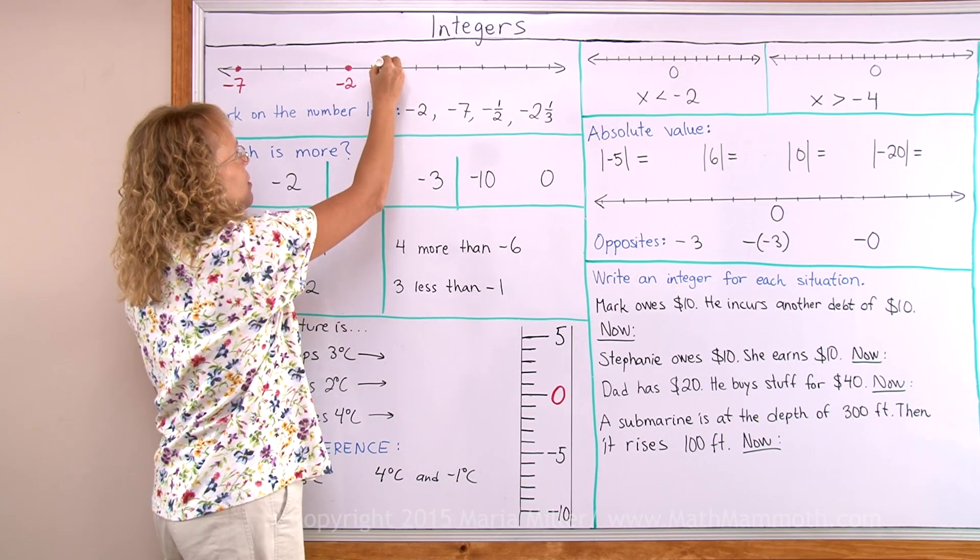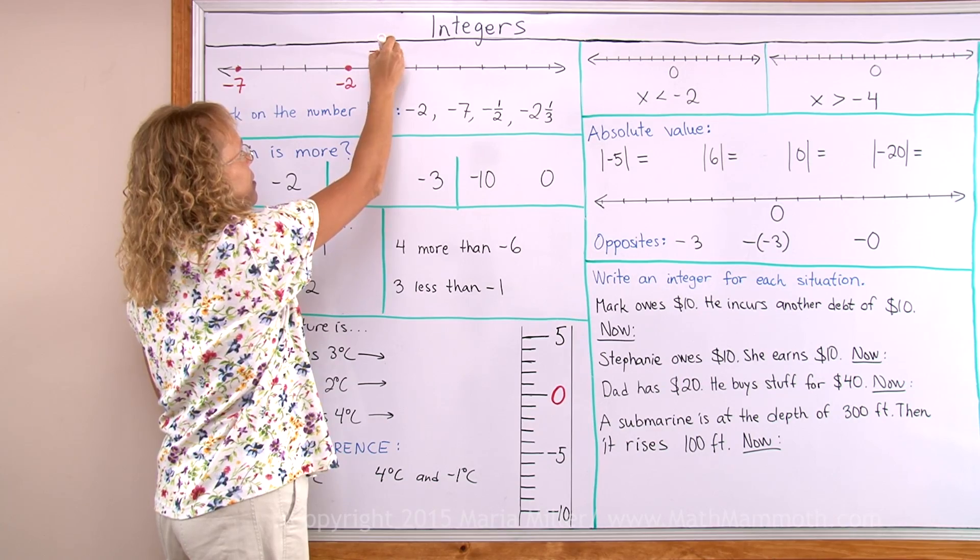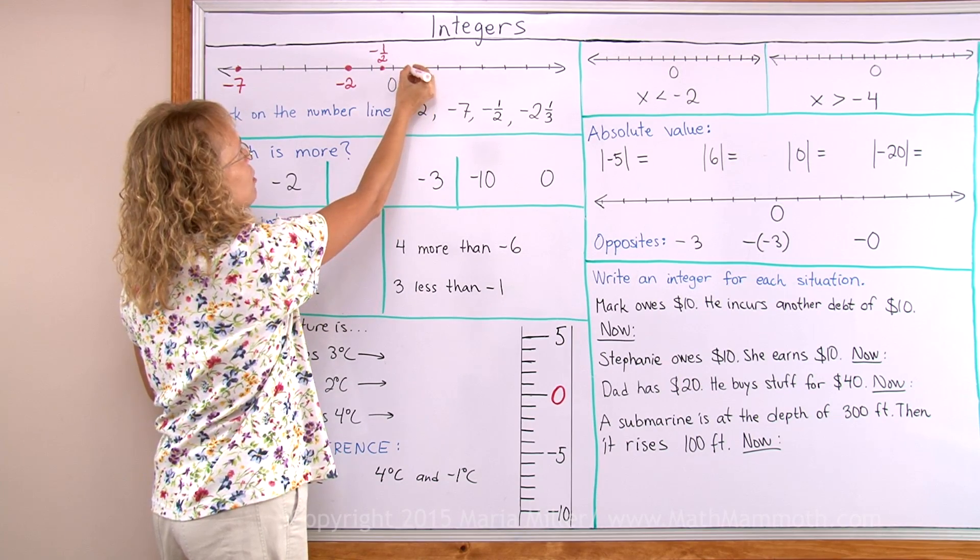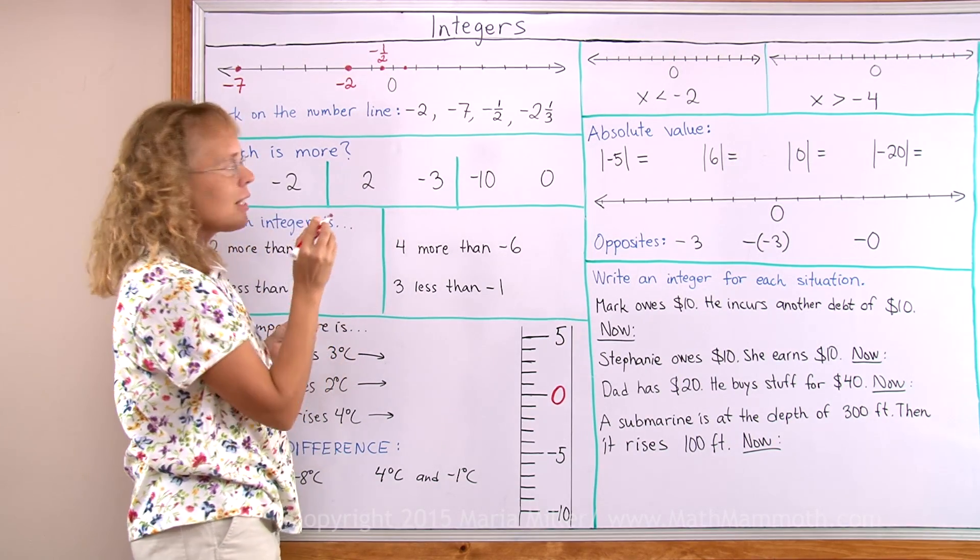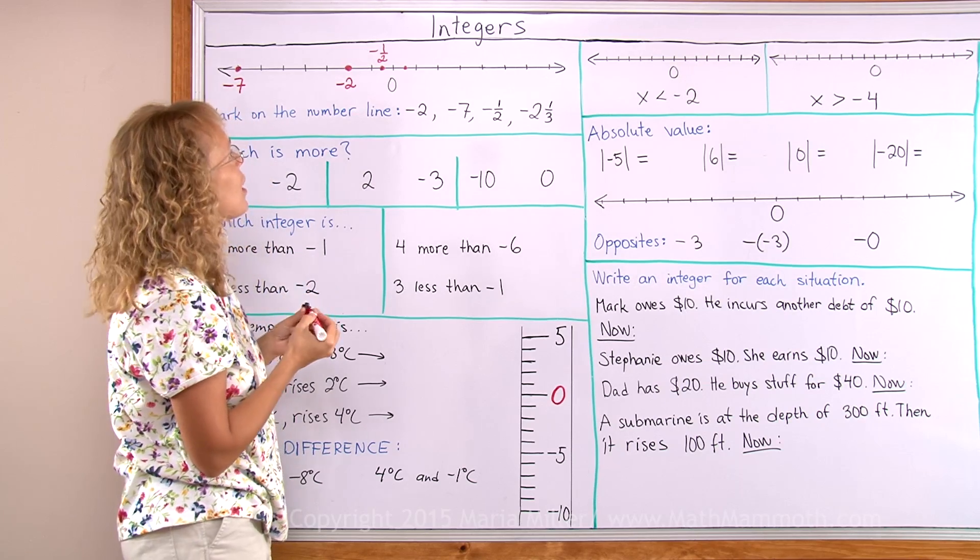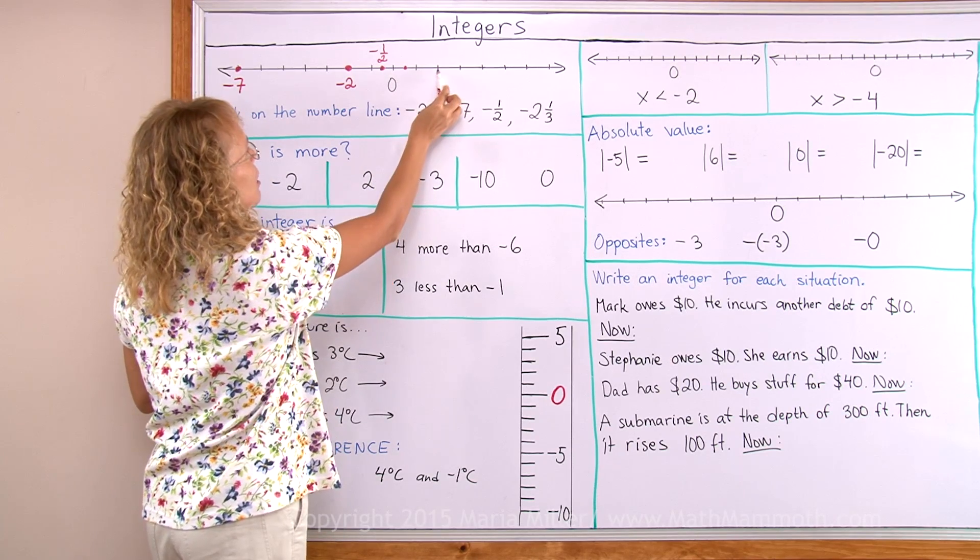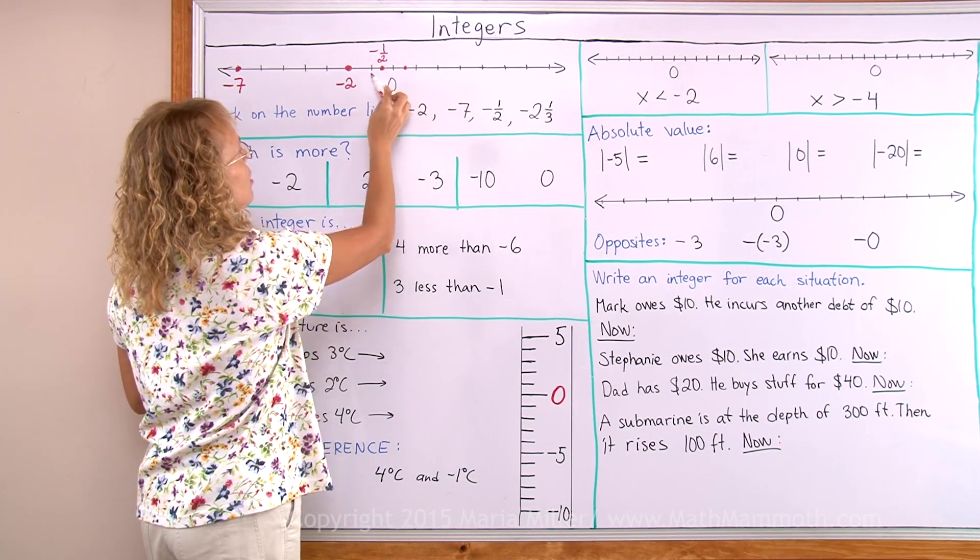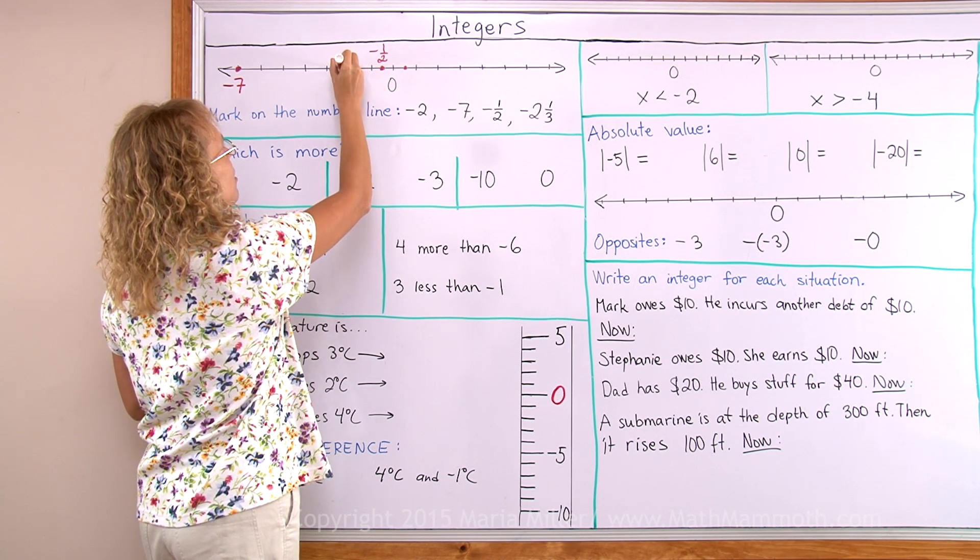So it is here. Negative 1 half is right there, just like positive 1 half would be here. And then negative 2, 1 third. Just like positive 2, 1 third is over here, we go first to negative 2 and then 1 third further.